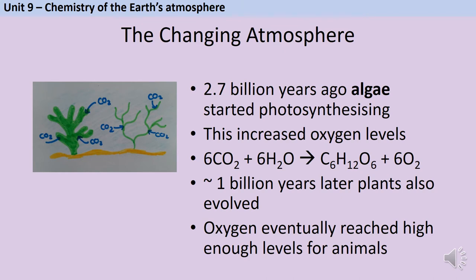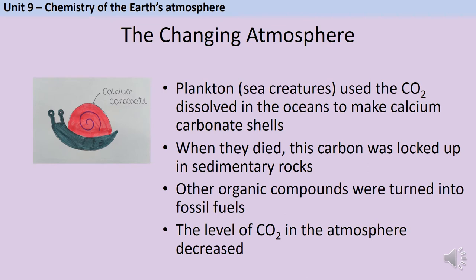You need to know both the word equation and the balanced symbol equation for photosynthesis - and it's really important that you read the exam question carefully, because you won't get marks for a symbol equation if asked for a word equation and vice versa. The important thing about photosynthesis is that it makes oxygen as a byproduct, so as algae began photosynthesizing, oxygen levels began to rise until they were high enough for animals to evolve. Tiny sea creatures called plankton used dissolved carbon dioxide to make calcium carbonate shells; when they died, the carbon was locked up and compressed into sedimentary rocks like limestone and chalk. Other organic compounds were turned into fossil fuels like crude oil, all contributing to lowering atmospheric carbon dioxide levels.